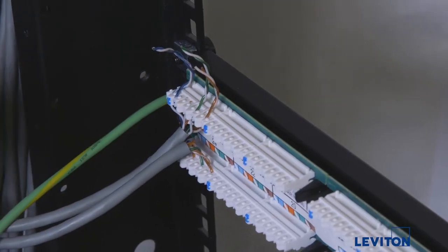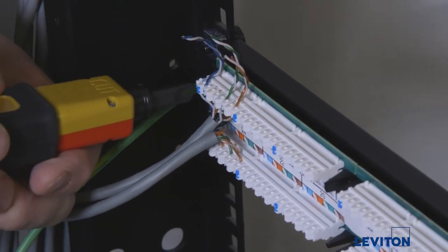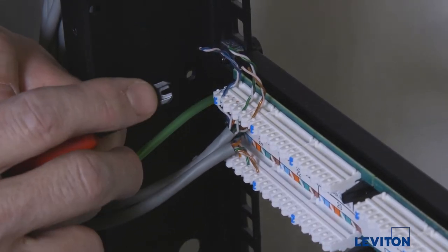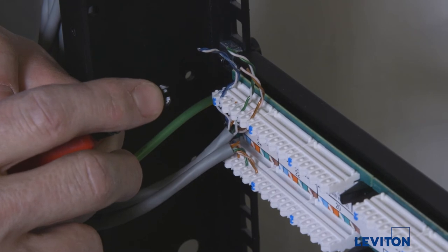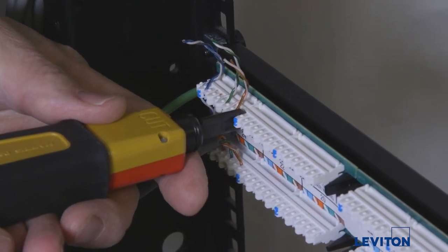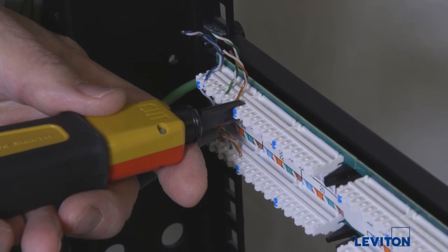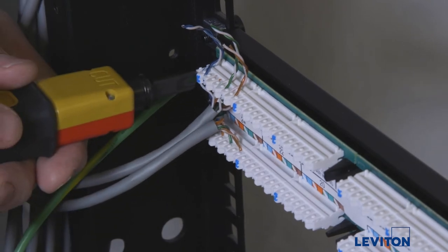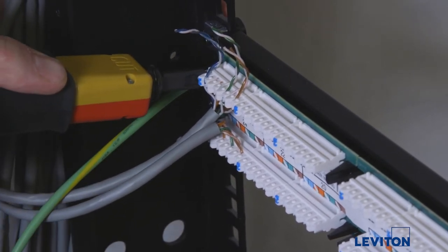This is the cutting edge of the 110 punch down tool. Turn the tool over so the yellow cutting side faces up. To make a clean cut angle the 110 punch down tool slightly upward. This will allow the blade to make full contact with the IDC cutting ledge. Punch down the pair and trim the wire.